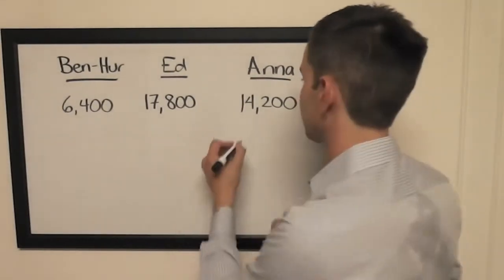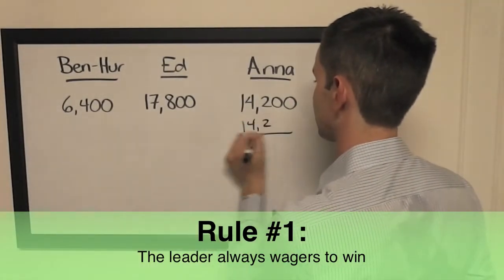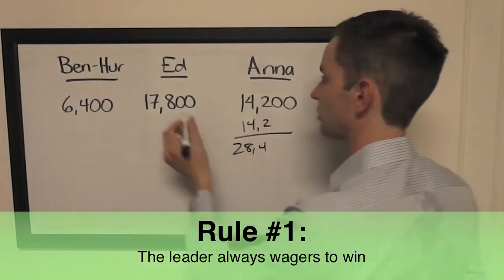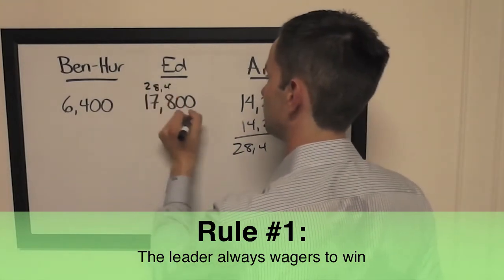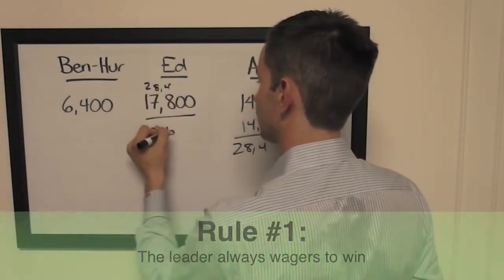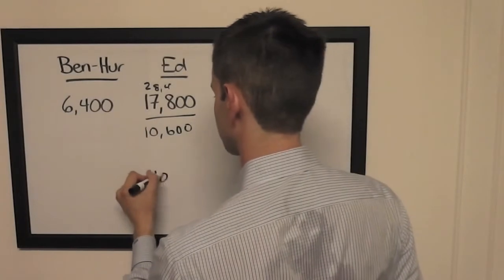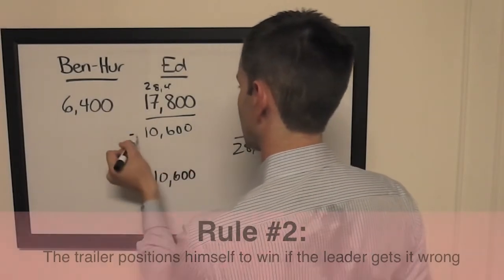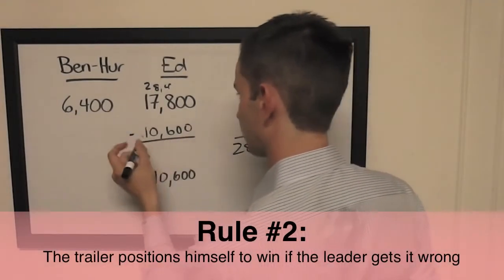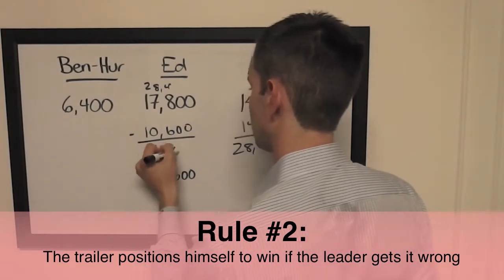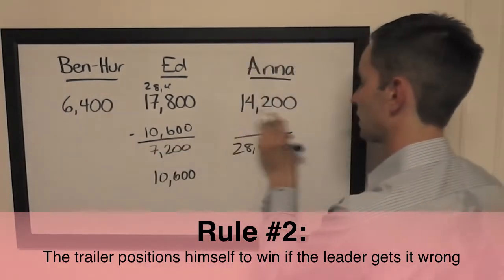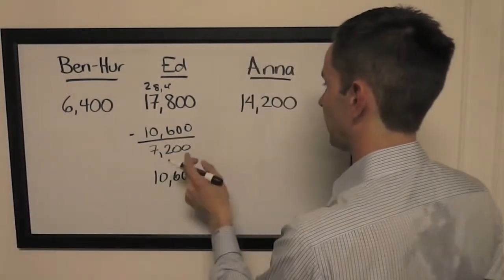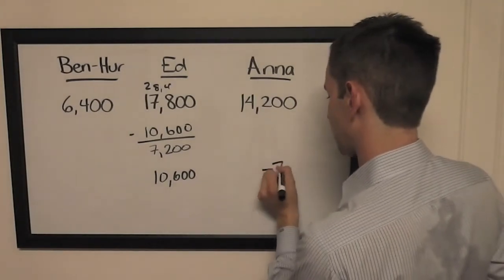Let's start with first and second. Anna doubles up, she will have 28,400. So to cover her, Ed will need to wager 10,600. If he gets it wrong with that wager, he'll be left with 7,200. So to stay above him, Anna will need to wager at most 7,000.